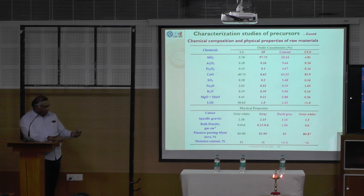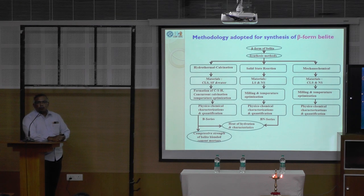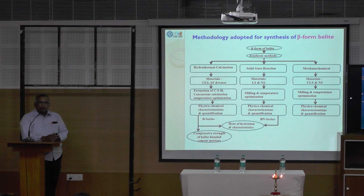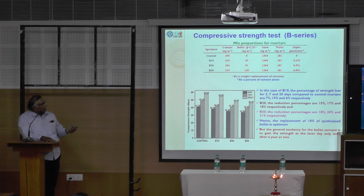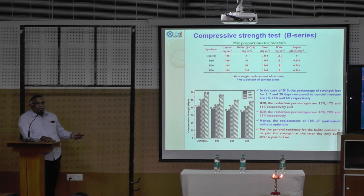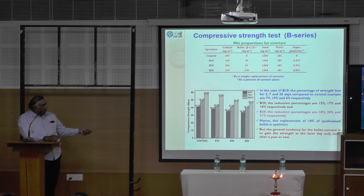With this in mind, I have attempted to synthesize belite by three different methods — this is a flow chart. I have formed the belite cement, which reduces the alite content. I have replaced OPC with belite up to 30 percent. But strength is coming down at early age, because belite gives later-day strength. If I allow it — since things are going on — I may get higher later-day strength. That is what this initial study I have published.